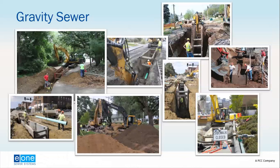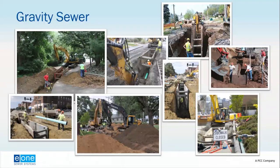When a gravity sewer design goes to the contractor, the byproduct is large equipment installing 8-inch minimum pipe in the middle of the road, taking up a big portion of the road and closing it in many cases, digging a deep excavation because the pipe is constantly going downhill. This is the typical expectation with gravity sewer system construction.